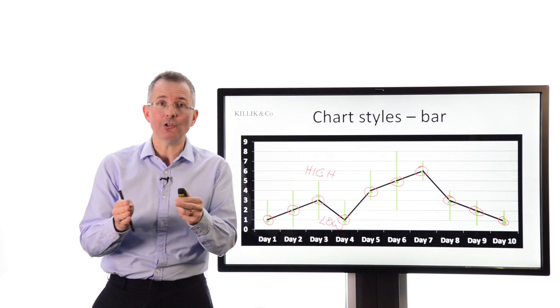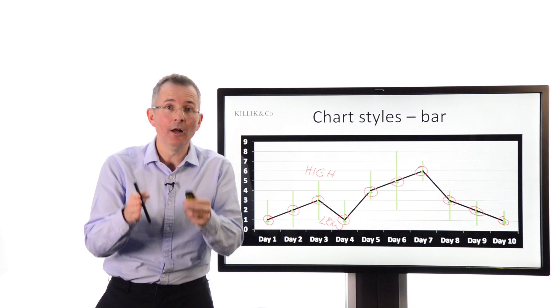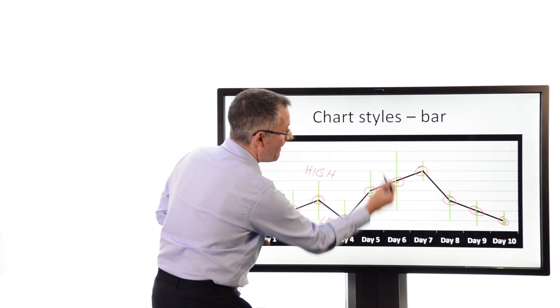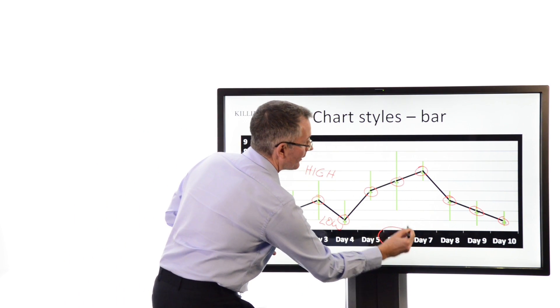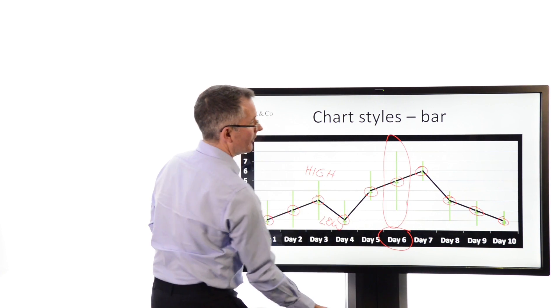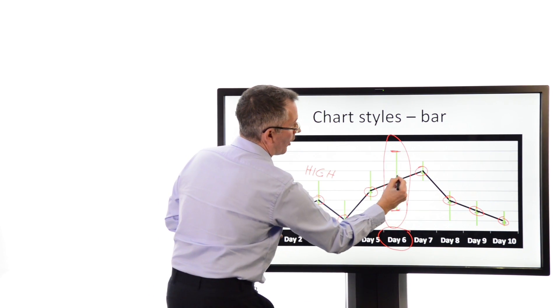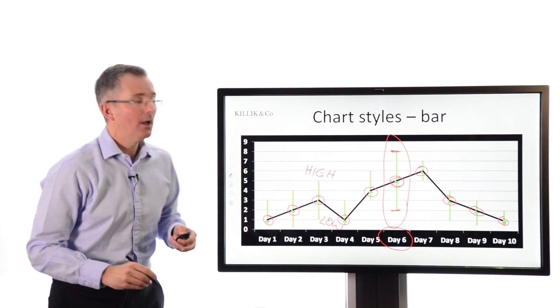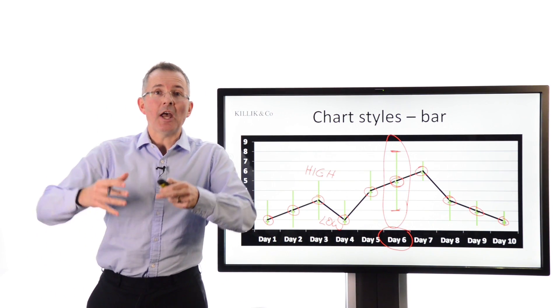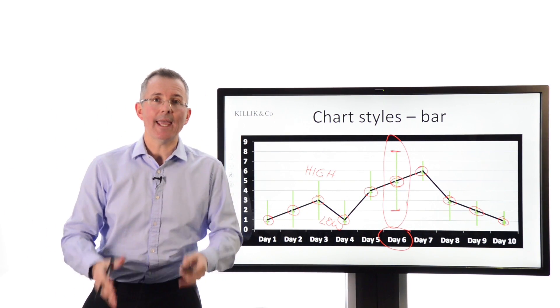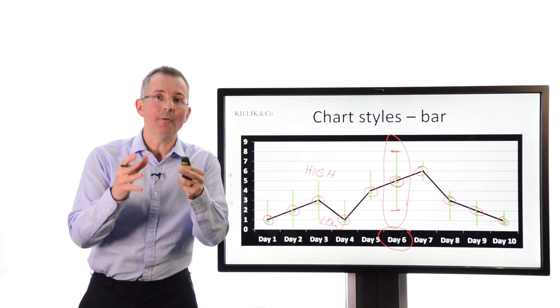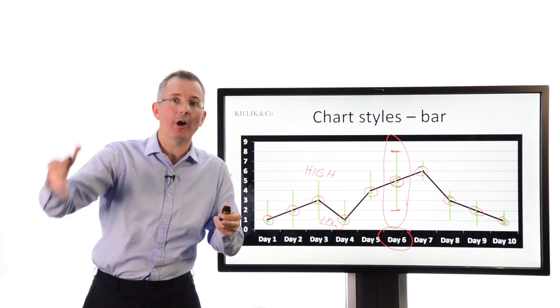And in this introduction, I just want to say that the longer the bar, the more volatile the stock was in that particular session. So day six, we've got quite a lot of volatility because you can see the low and the high are quite a long way away from the close. So it gives you an idea of how much movement there was over the course of the day and also where the closing price ended up in relation to where trading moved the price.